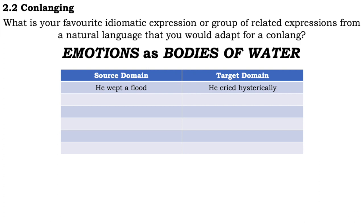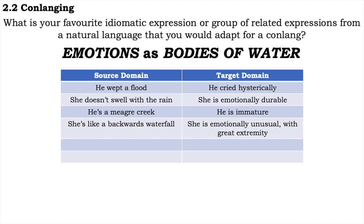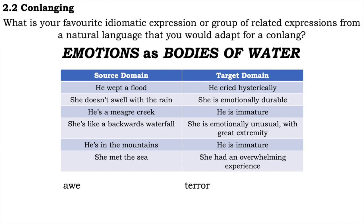These mappings can consequently lead to phrases like, he wept a flood, to mean he cried hysterically. She doesn't swell with the rain, to mean she's emotionally durable. He's a meagre creek, to mean he's immature. She's like a backwards waterfall, she's emotionally unusual with great extremity. He's in the mountains, he's immature. She met the sea, she had an overwhelming experience, whether good or bad. A bit like how awe and terror just refer to massive emotion, whether good or bad, unless we have those weird good-bad doublets of awesome-awful and terrific-terrible.